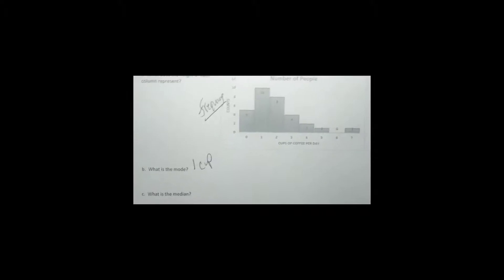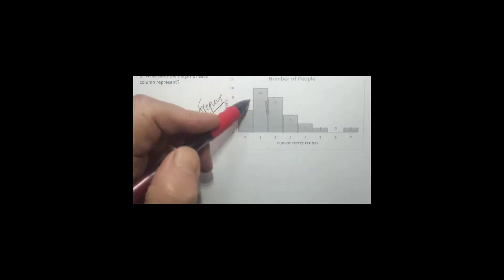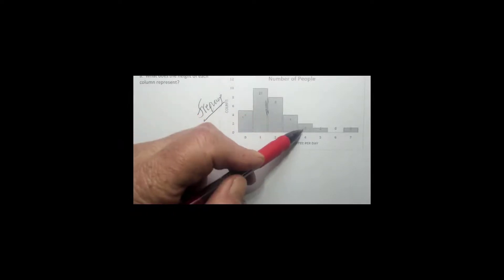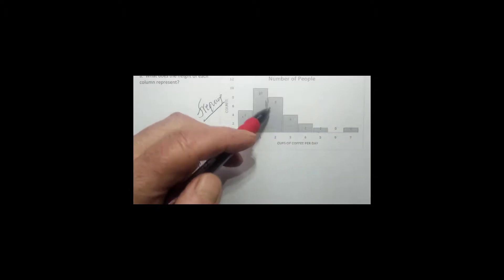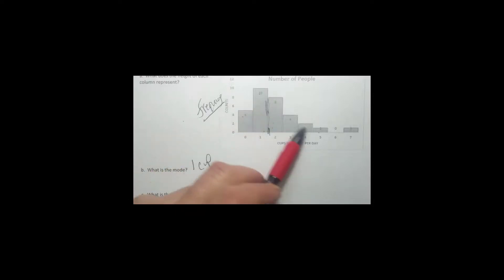The median is the one in the middle. I start counting: there are 15 below and about 16 above, so it's a little bit more than one cup of coffee. To find the median precisely, you'd really need the data displayed differently, perhaps in a column format in Excel, because there are a lot of numbers here.